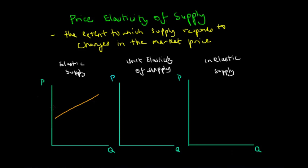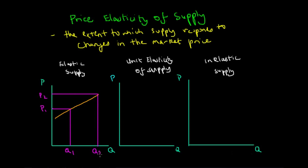If the price starts at P1, that corresponds to a quantity of Q1 supplied. But if the price increases to P2, the quantity supplied would therefore increase to Q2. The quantity increase is proportionally greater than the price increase, because producers will see greater profit opportunities in this market and so increase their quantity supplied to increase their profits.